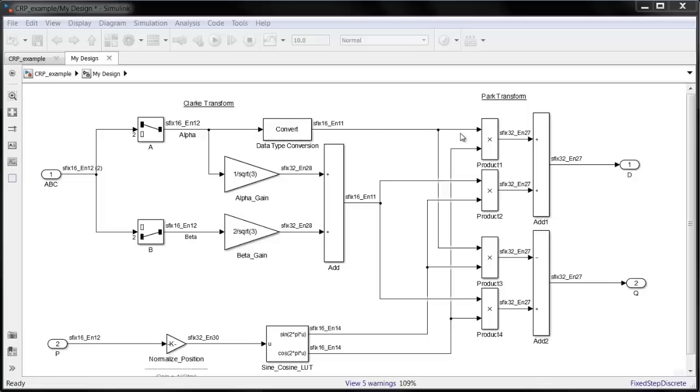These both go into parallel operations in the Park transform where the results are added here. It might take 10 nanoseconds for the path from alpha, but 30 nanoseconds from the path from beta to arrive here. And what if alpha changes in the meantime? Its second value will arrive here before the first one does from beta. So that's a very simple example.